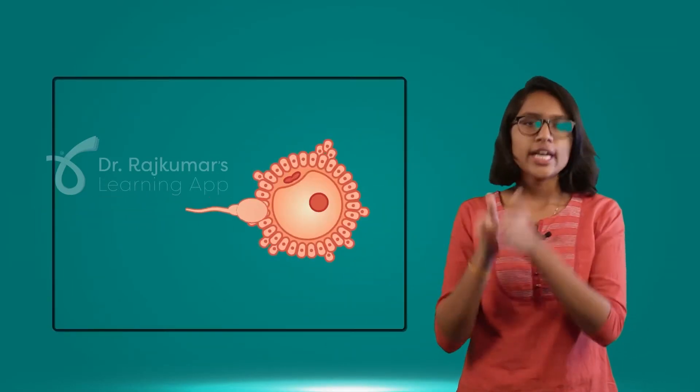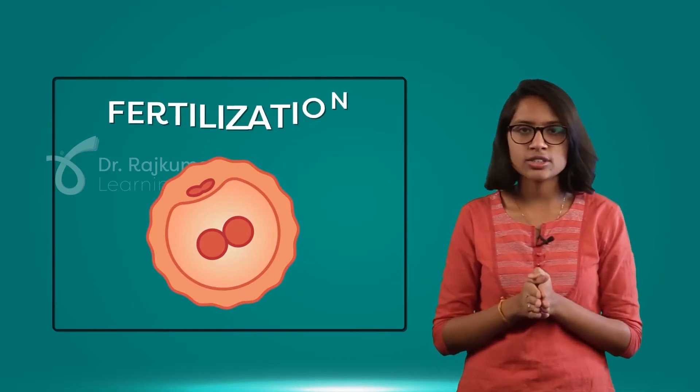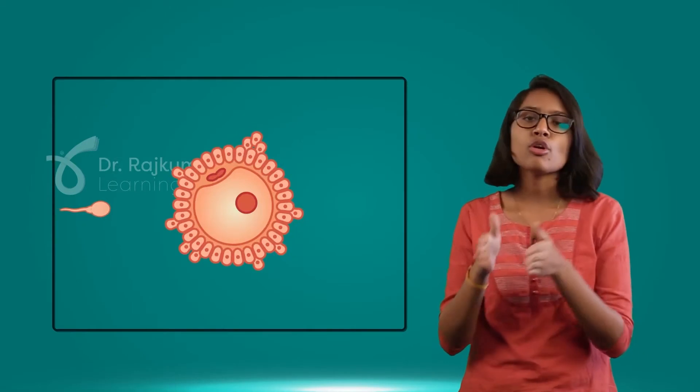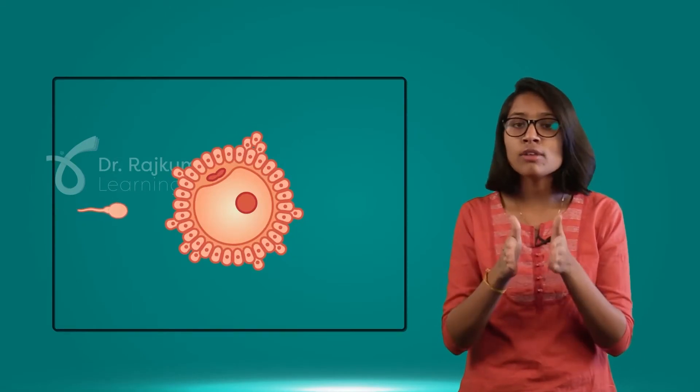Now we know that the sperm fuses with the egg to form a zygote, and this process is called fertilization. During this process, the sperm will swim towards the ovum, and the ovum has a layer called zona pellucida.